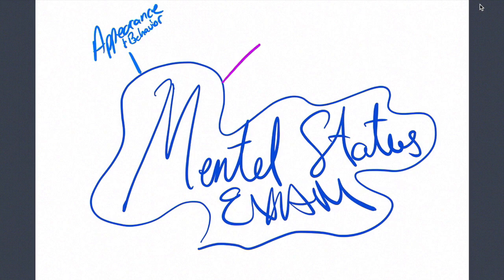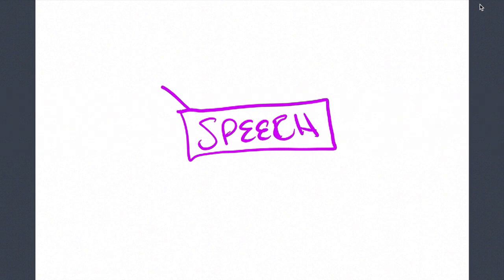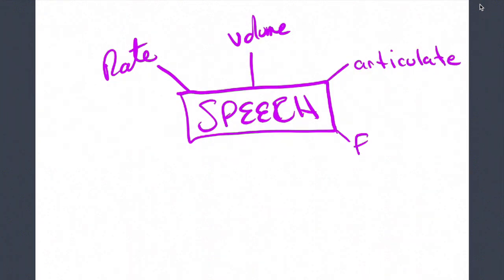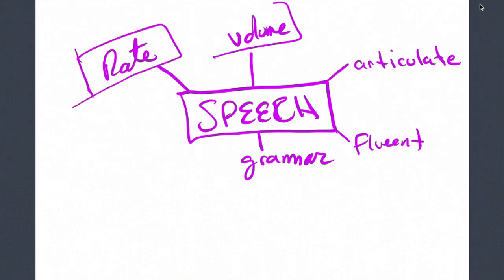Another part of the mental status exam is going to be speech. Some aspects of speech to focus on are going to be the rate of speech. Are they speaking really fast or speaking very slow? You can also comment on volume. Are they speaking really loud or not? Other things to comment on are how well they articulate, how fluent they are or the grammar. But overall, I would say the rate of their speech and volume are really the big things in speech that I would be focused on.